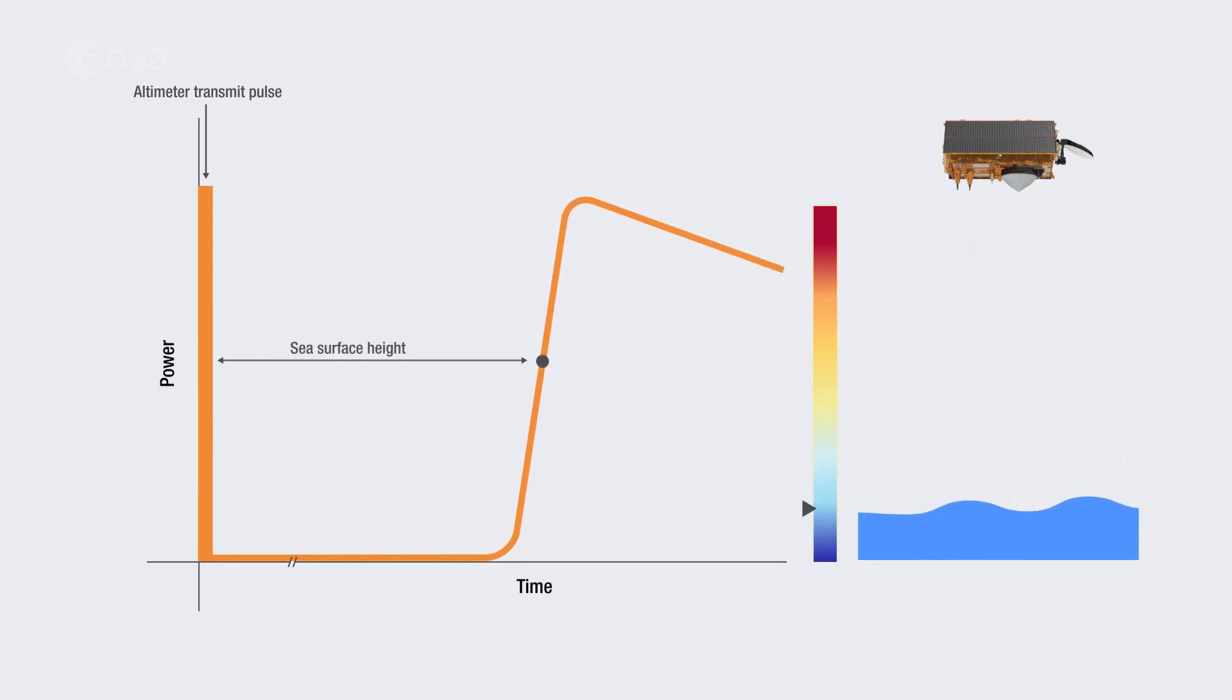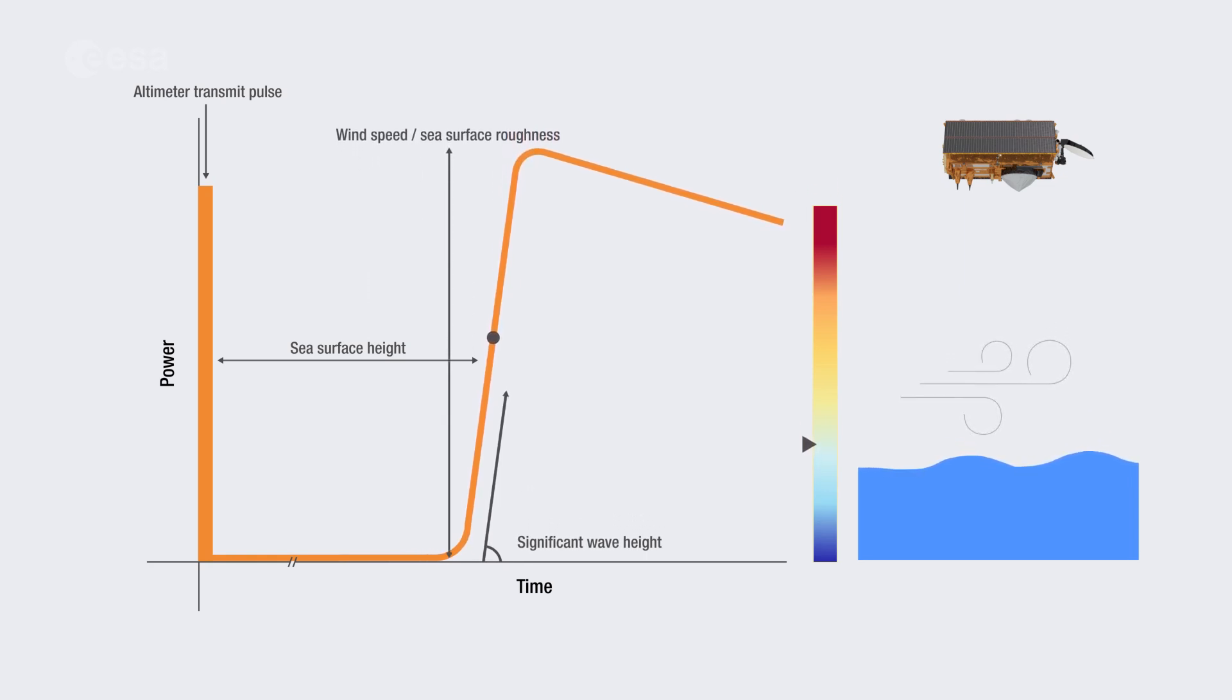The shape of the waveform is used to determine the sea surface height from the radar range, the significant wave height from the slope of the waveform leading edge, and the surface wind speed from the ocean roughness expressed by the power of the radar echo.